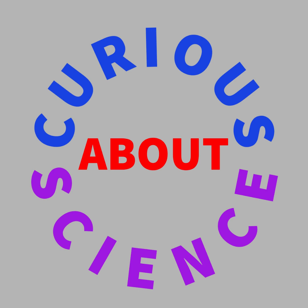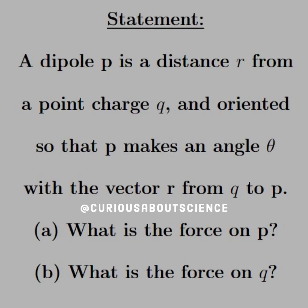Alright, welcome back. Our statement today reads: A dipole P is a distance R from a point charge Q, and oriented so that P makes an angle theta with the vector R from Q to P.